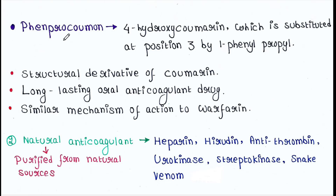Next is phenprocoumon. These are 4-hydroxycumarine substituted at position 3 by 1-phenylpropyl. They are structural derivatives of coumarin. They are long-lasting oral anticoagulant drugs with a similar mechanism of action to warfarin.